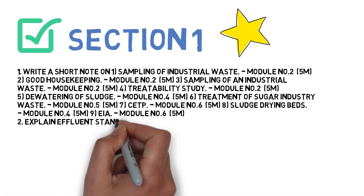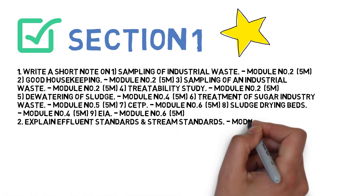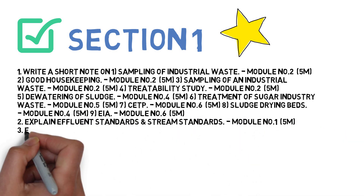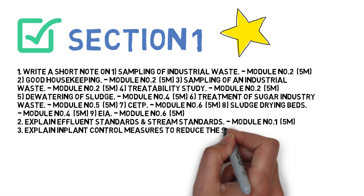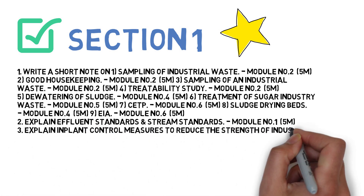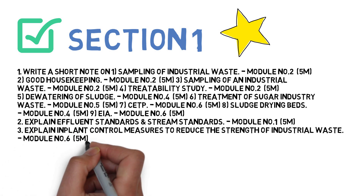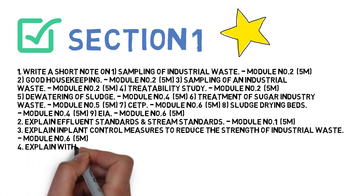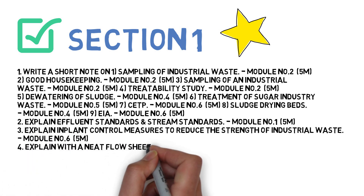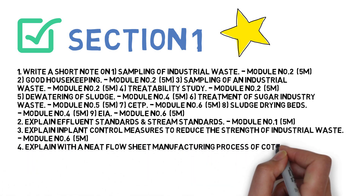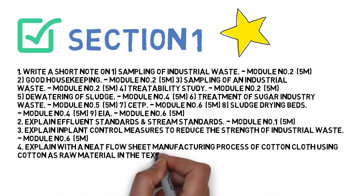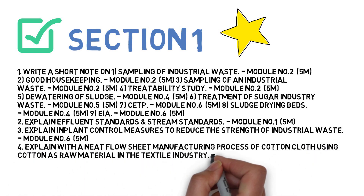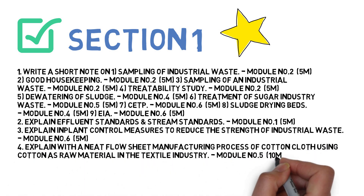Let's go to question number two in Section 1. First is explain effluent standards and stream standards. Next is explain in-plant control measures to reduce the strength of industrial waste. Next is explain with neat flow sheet the manufacturing process of cotton cloth using cotton as the raw material in the textile industry. These four questions you have to do for Section 1.